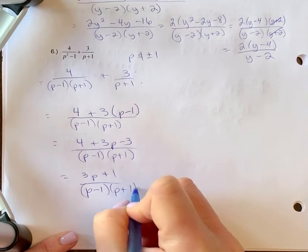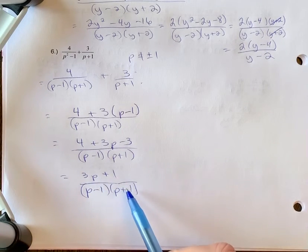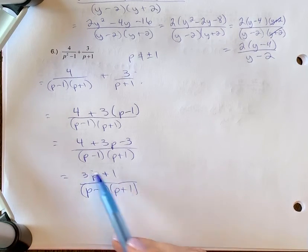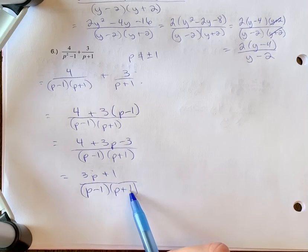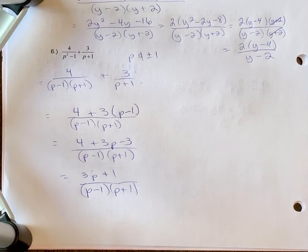There's no greatest common factor, these don't cancel. This is three p plus one, not p plus one, so you can't just ignore that. So this is your final answer.